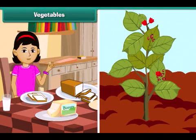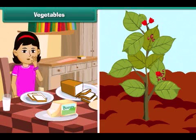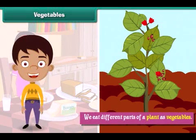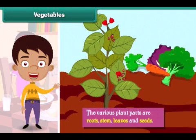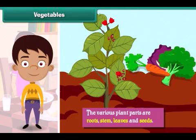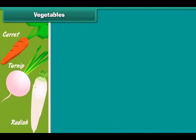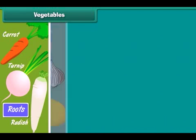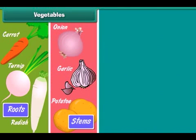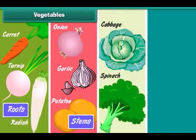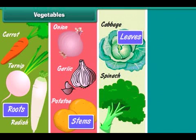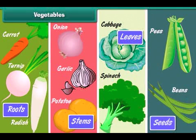We get our food from plants. The various parts of a plant are eaten as vegetables. The various plant parts are roots, stem, leaves and seeds. Carrots, turnips and radish are roots. Potatoes, onions and garlic are stems. Spinach and cabbage are leaves. Peas and beans are seeds.